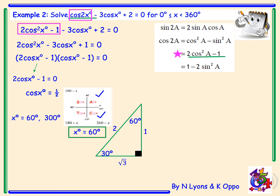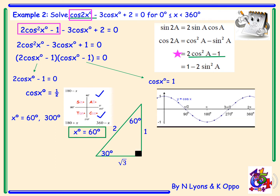Next, cosx - 1 = 0 rearranges to cosx = 1. Drawing the cosine graph, it equals 1 at 0 degrees and 360 degrees. However, 360 degrees is outside our range since we list all angles less than 360 degrees. Our final solution is x = 0°, 60°, and 300°.